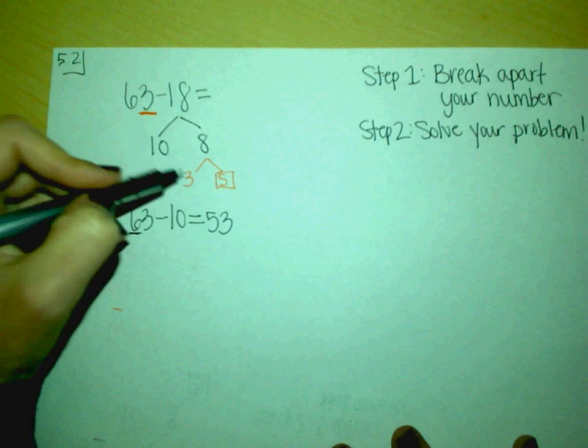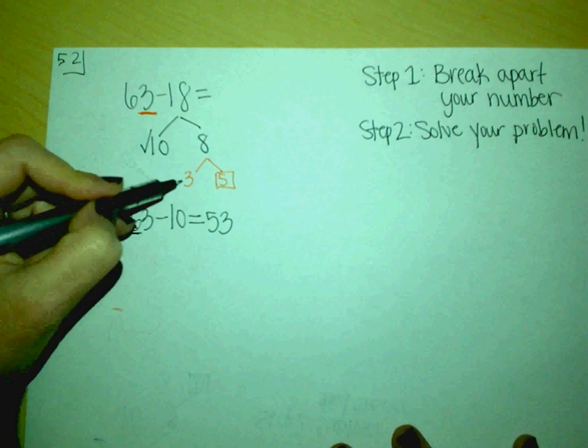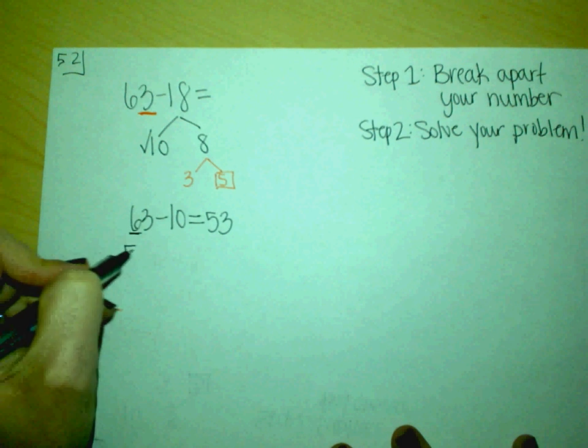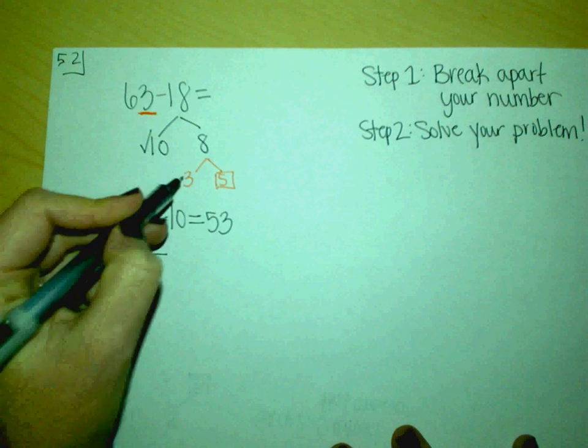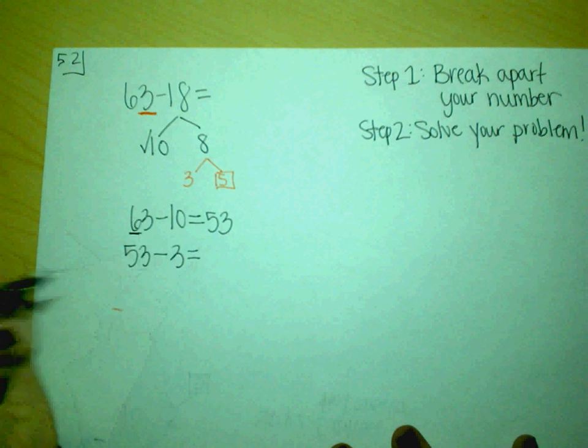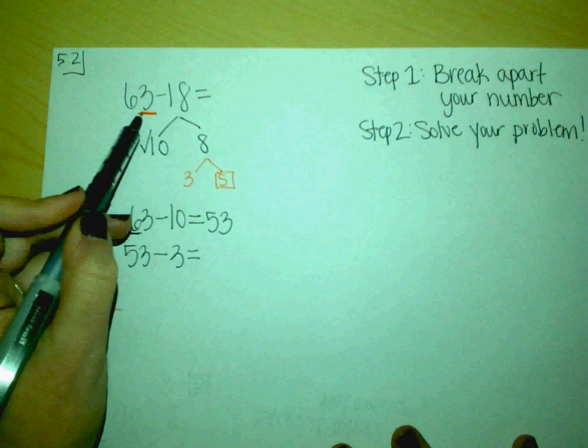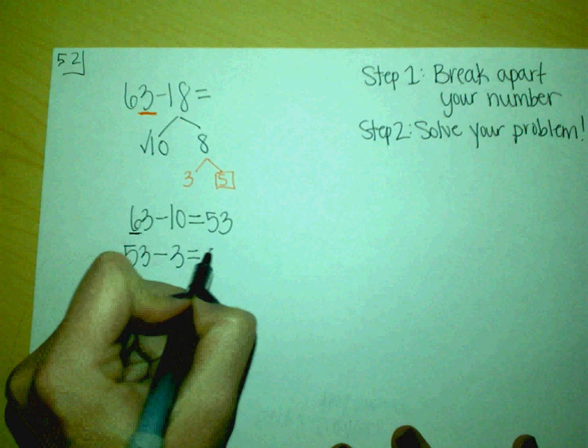Now we are ready for our next problem. We've used ten, now I need to use three. So now I have 53 minus three, and the reason we chose three is to get us to our benchmark number, which is 50.